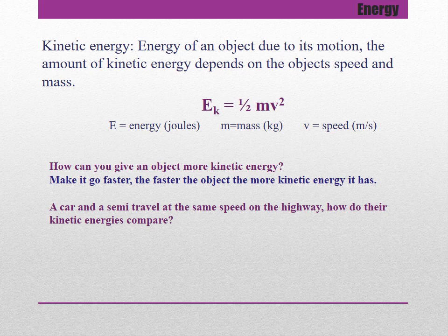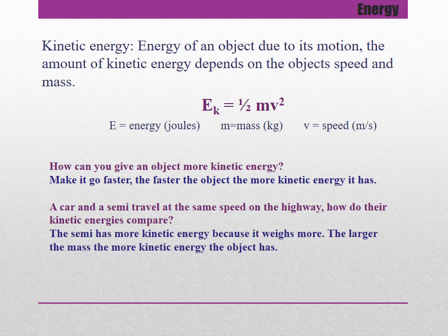A car and a semi are traveling at the same speed on the highway. How do their kinetic energies compare? The semi has more kinetic energy because it weighs more. The larger the mass, the more kinetic energy the object has. They are traveling the same speed, so they have the same velocity — whichever one is heavier will have more kinetic energy.